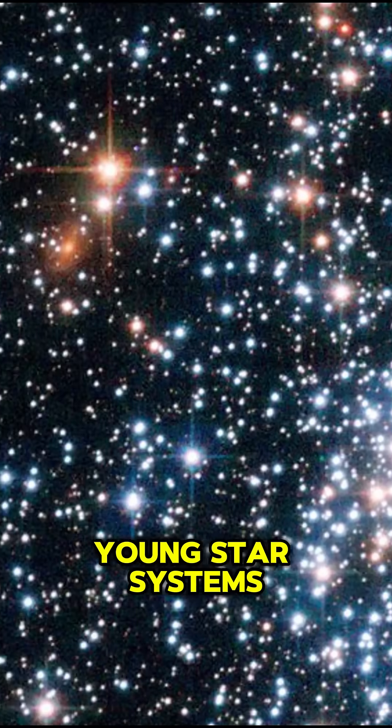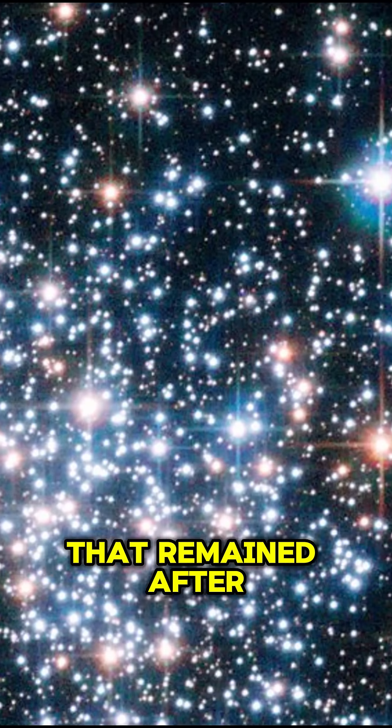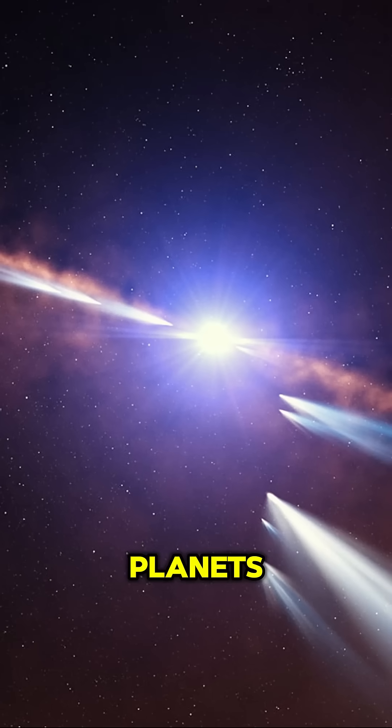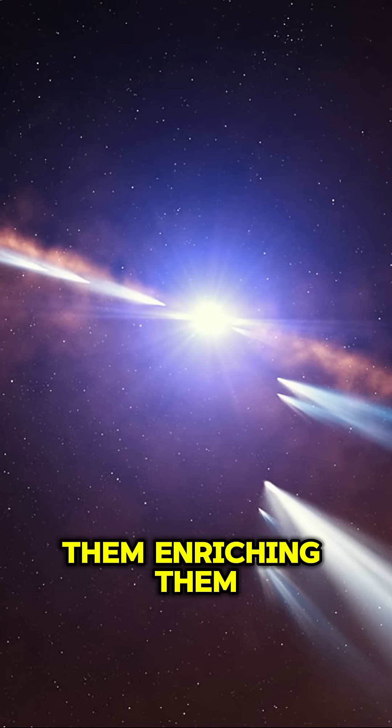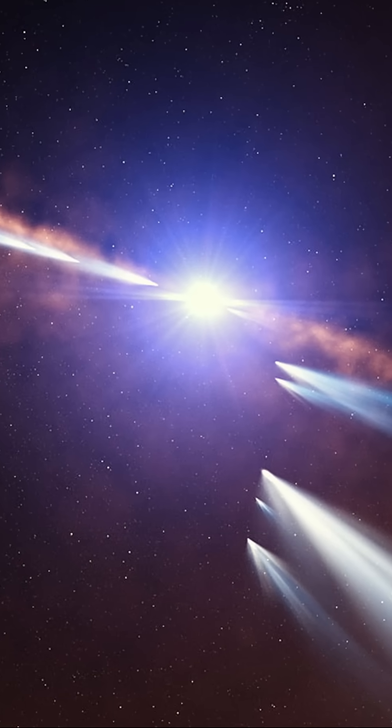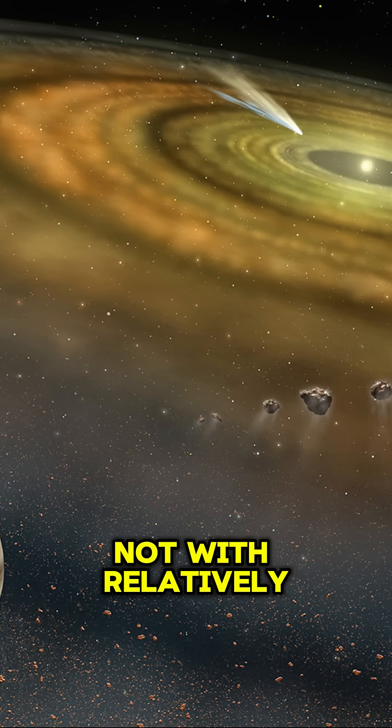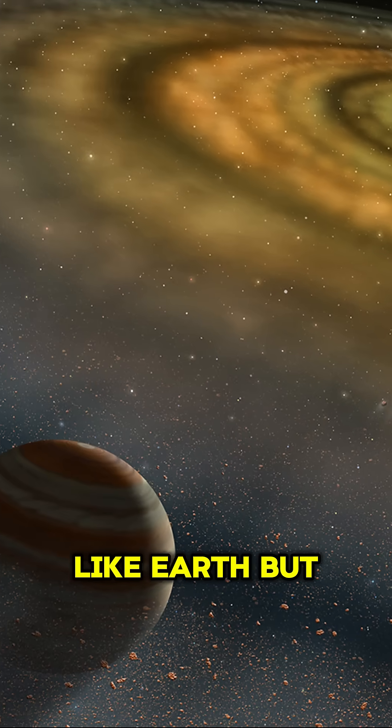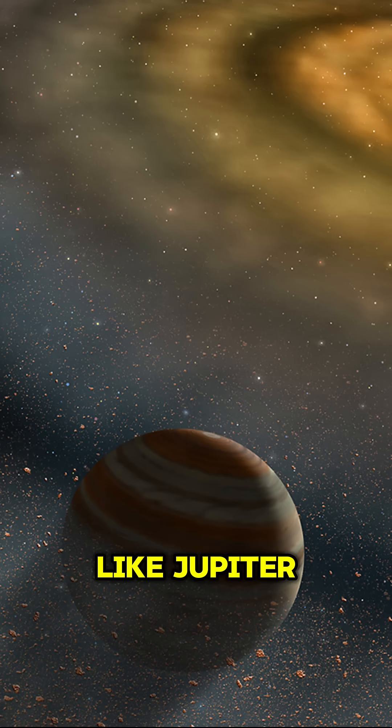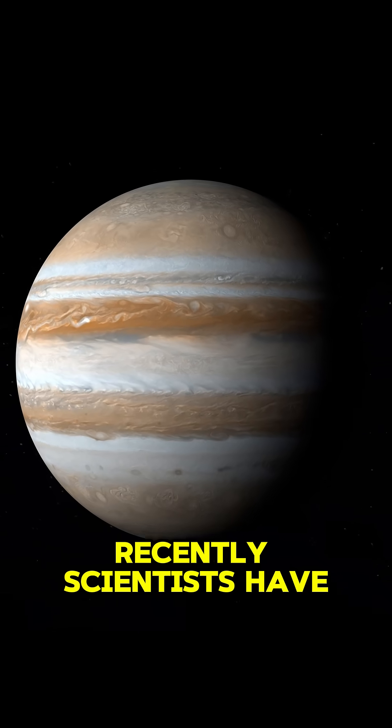Young star systems are full of planetesimals that remained after the formation of planets. They fall on them, enriching them with various minerals. Moreover, most of these events most likely occur not with relatively small planets like Earth, but with gas giants like Jupiter. Some of them may have metal cores 100 to 300 times heavier than our planet.